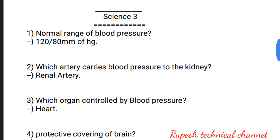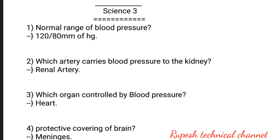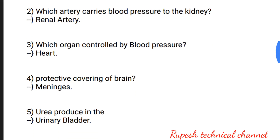Science part 3. Question number 1: normal range of blood pressure — 120 by 80 mmHg. Question number 2: which artery carries blood to the kidney? — Renal artery. Question number 3: which organ controls blood pressure? — Heart.